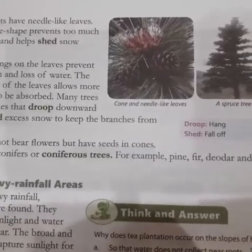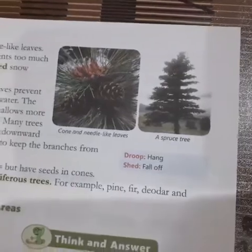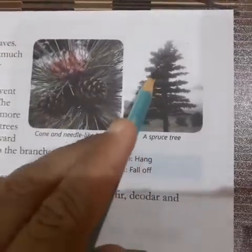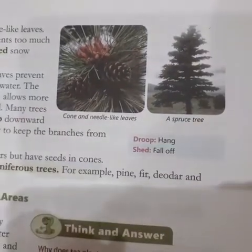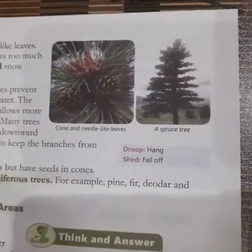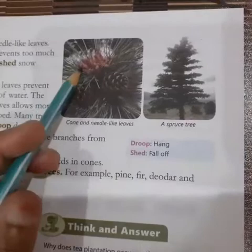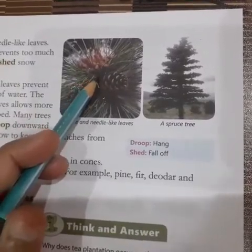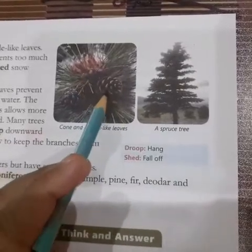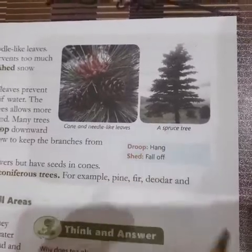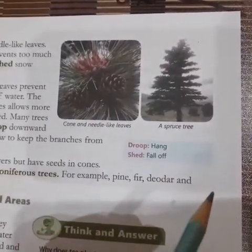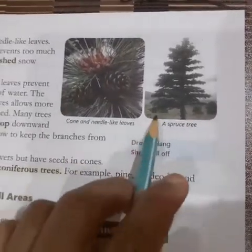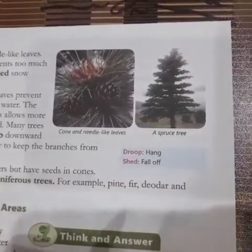Here are some characteristics of mountain plants. Most plants have needle-like leaves. The needle shape prevents too much water loss and helps shed snow easily. The waxy coating on the leaves prevents evaporation and loss of water. The dark color of the leaves allows more solar heat to be absorbed. Many trees have branches that droop downward to help shed excess snow and keep the branches from breaking.